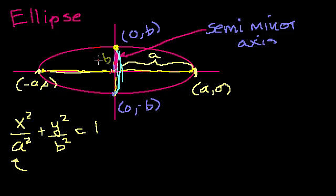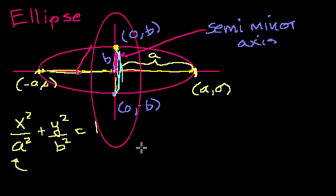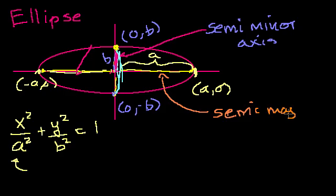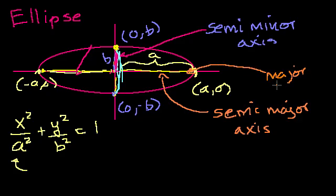b is the semi-minor axis in this example because b is smaller than a. If b were larger than a, I'd have a tall and skinny ellipse — in that case b would be the semi-major axis. In the original drawing, a is the length of the semi-major axis, also called the major radius, while b is the minor radius.